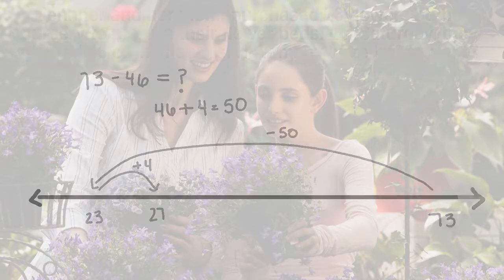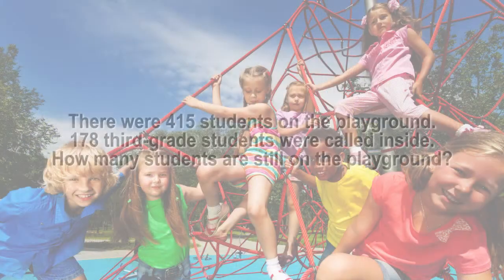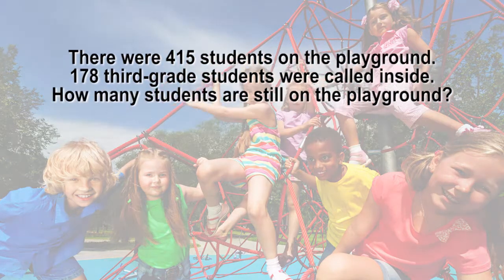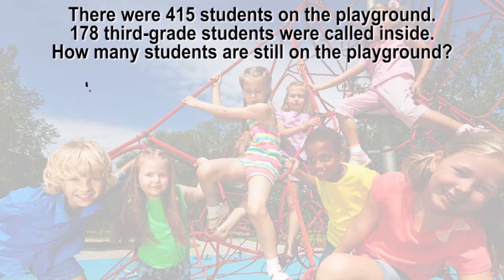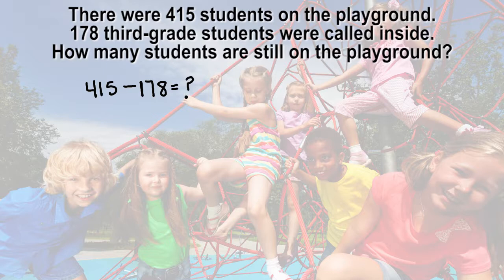Let's solve another problem. There were 415 students on the playground. 178 third grade students were called inside. How many students are still on the playground? The subtraction equation to represent the problem is 415 subtract 178 equals something.